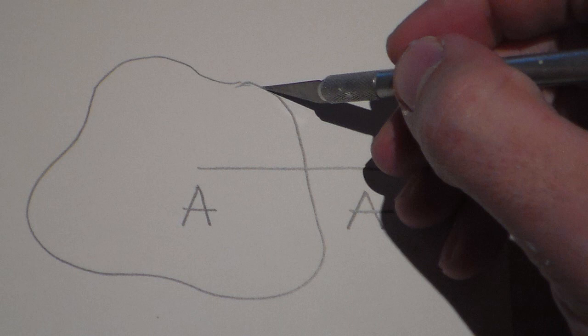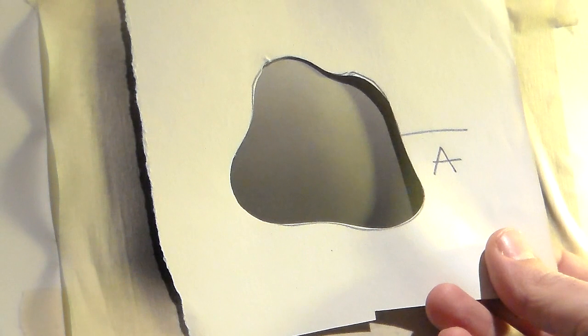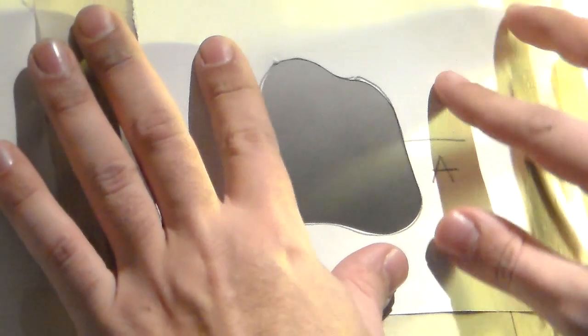After that, we have to cut it out. The reason to mark it with letter A, for example, is in case we do more than one, to know which parts belong to which water drops.